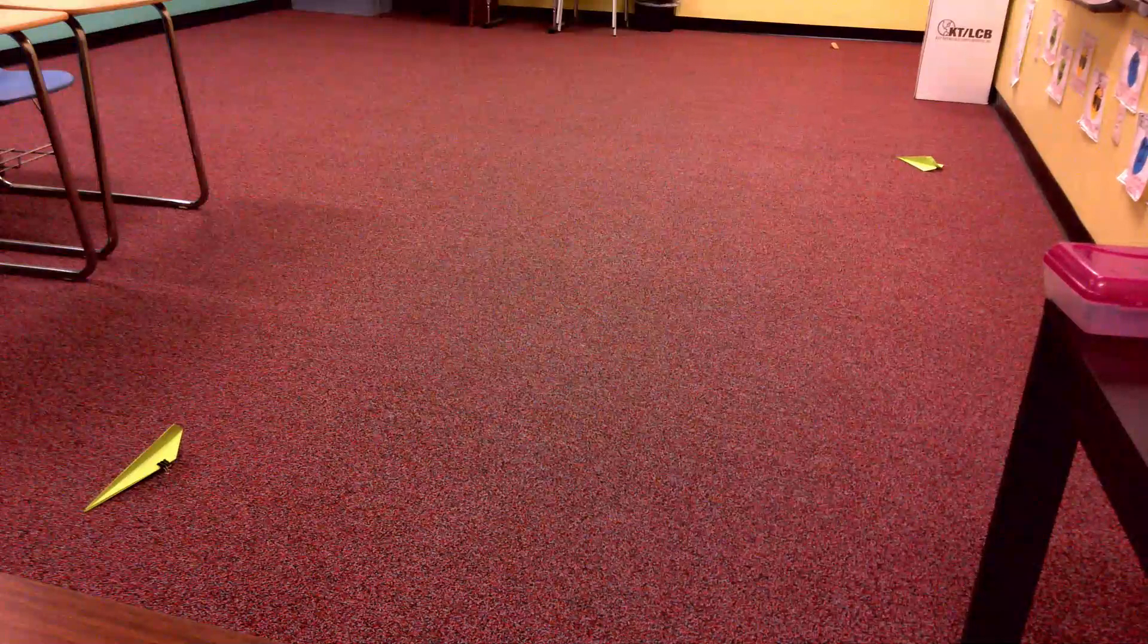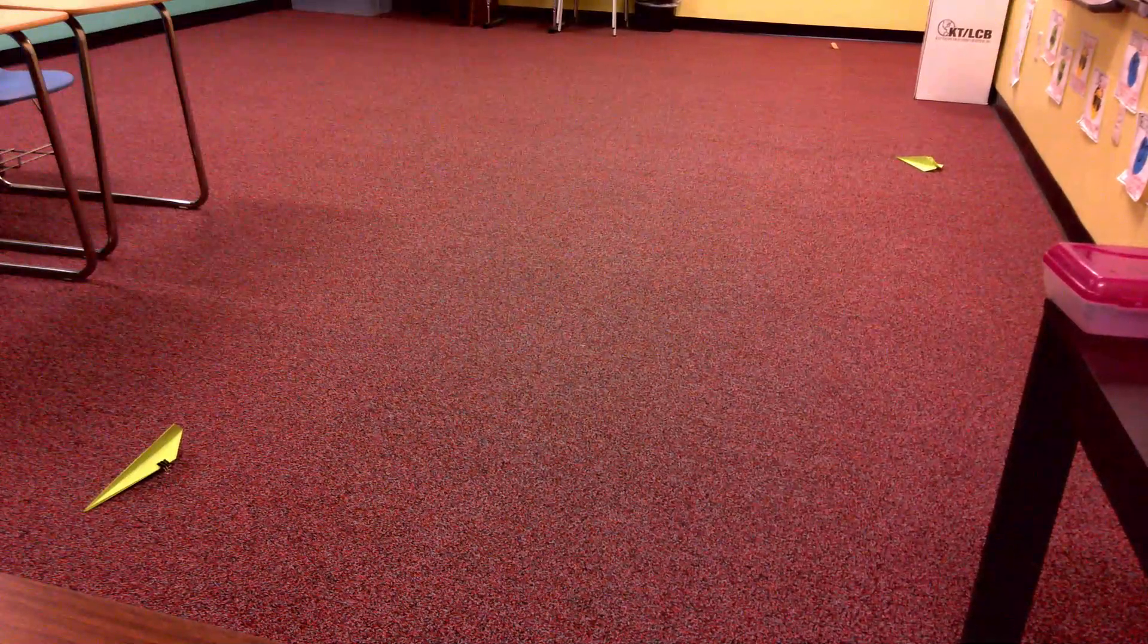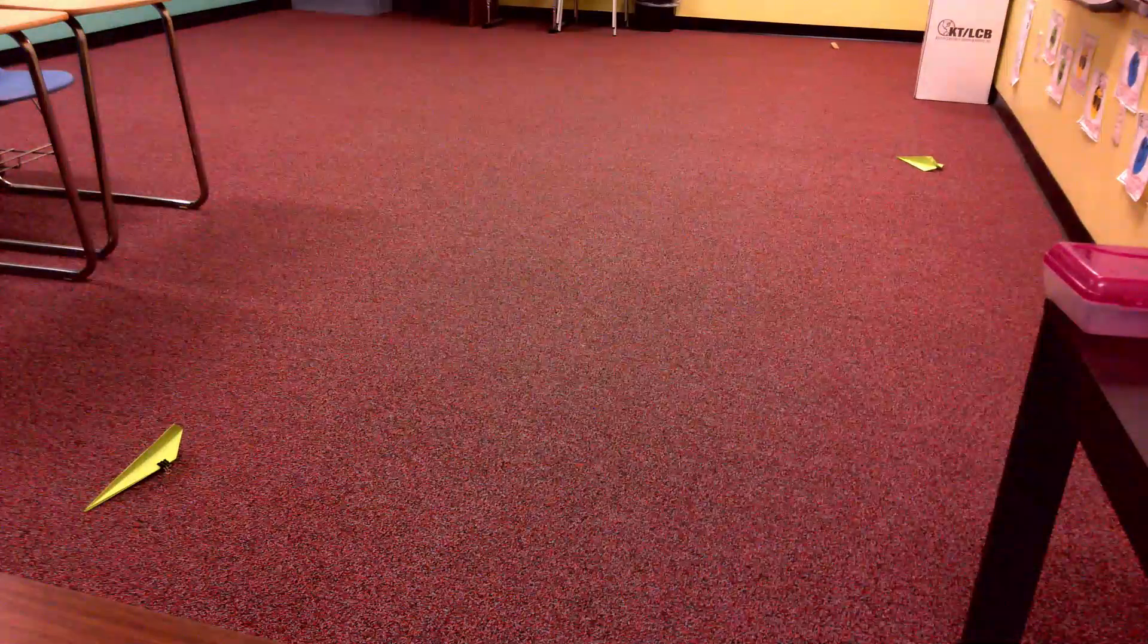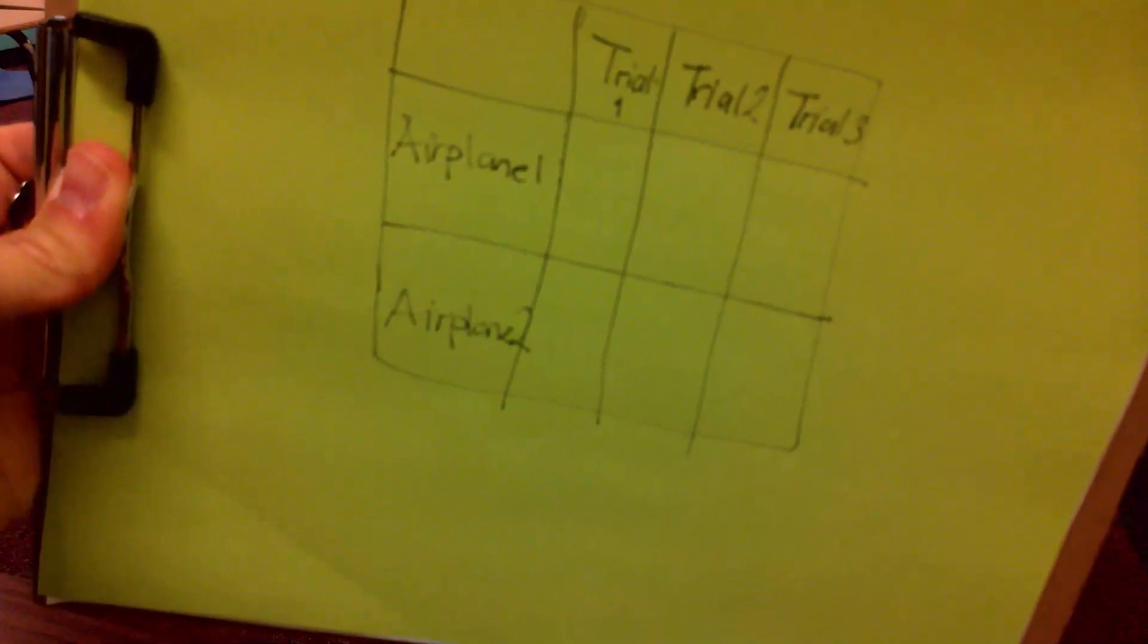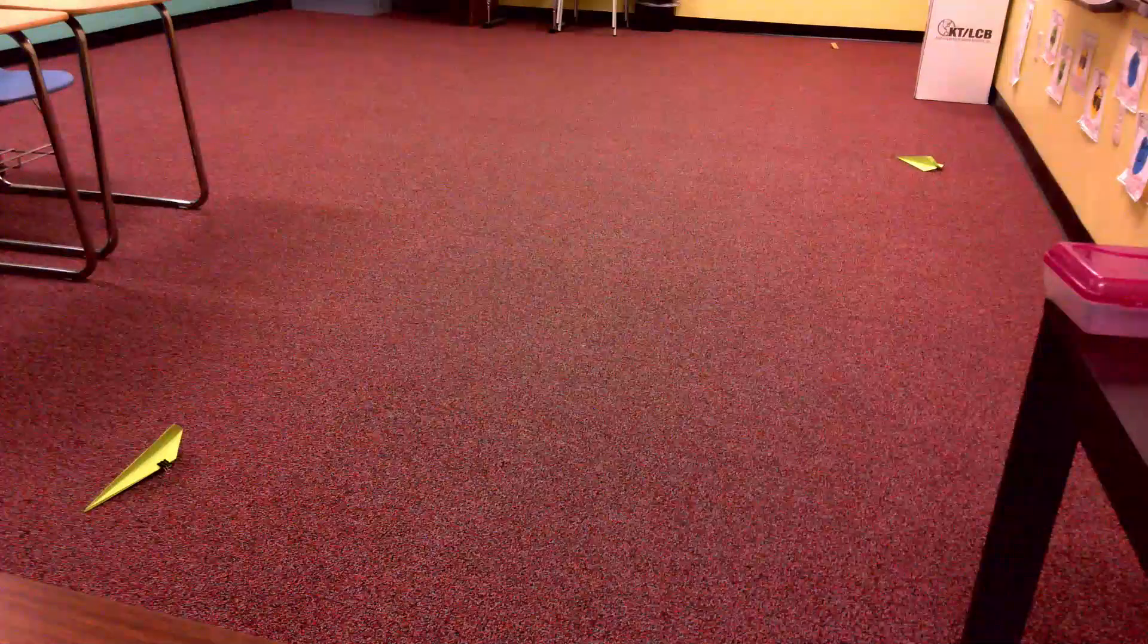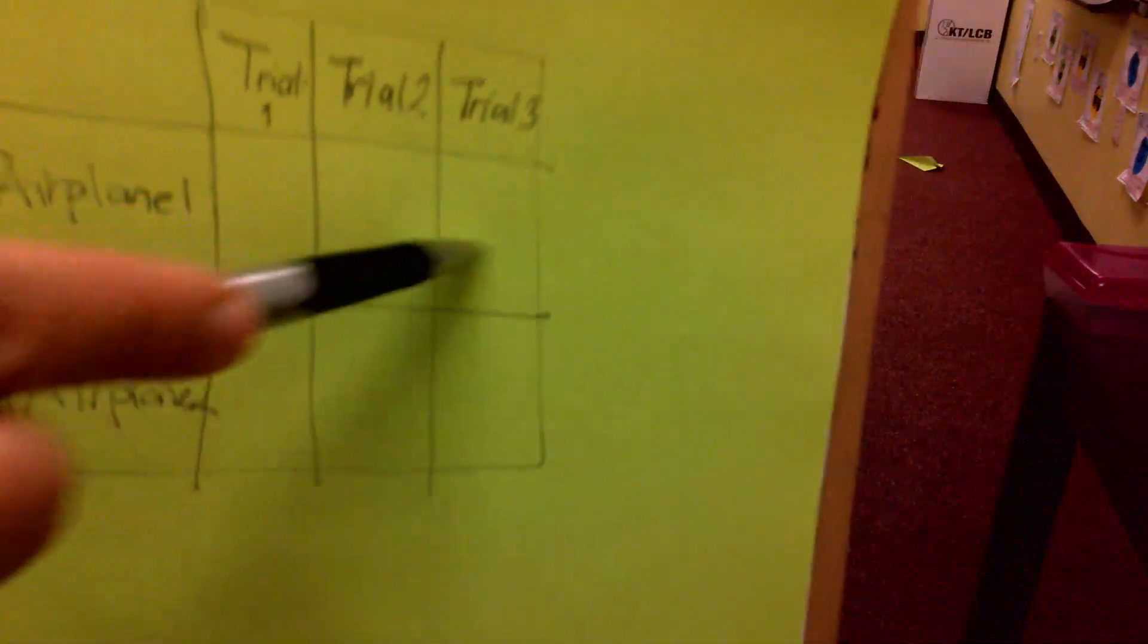So this is how you make the experiment. You see how I threw this first one. I need to throw it three times and I need to measure it and I have to write it down right over here. I will write it down. And then I'm going to throw it two more times. I will fill out this first line.